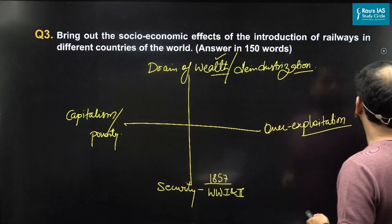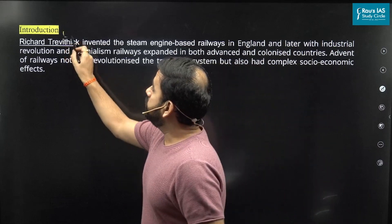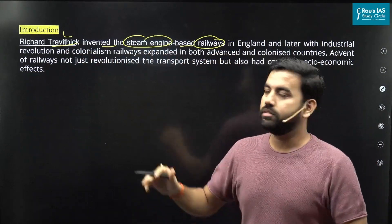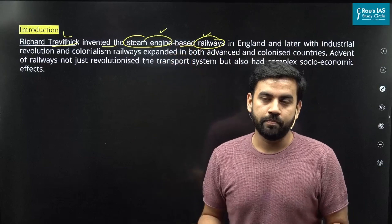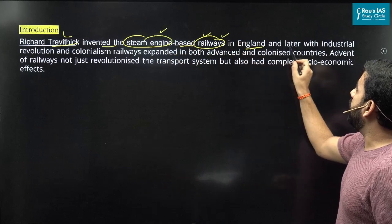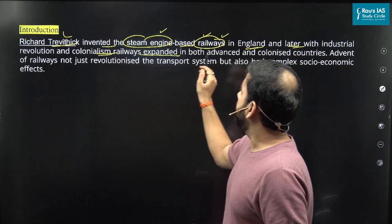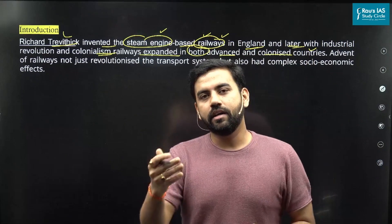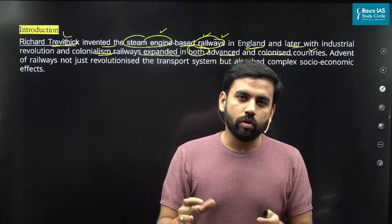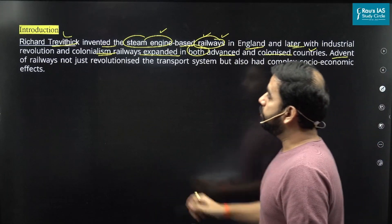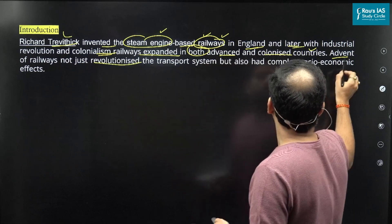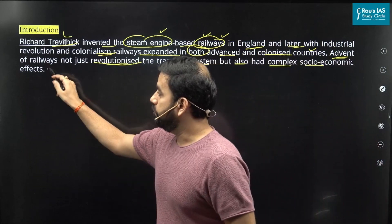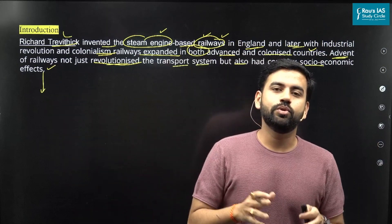Now the same answer structure could be organized as follows. Richard Trevithick invented the steam engine-based railways — don't confuse this with James Watt, because we are talking about railways and not just the steam engine. Trevithick invented the railway starting in England, and later with the industrial revolution and colonialism, railways expanded in both advanced and colonized countries. This is how you can start with a background. Starting a history answer with background is one of the best approaches. From there: the advent of railways not just revolutionized the transport system but also had complex socio-economic effects.